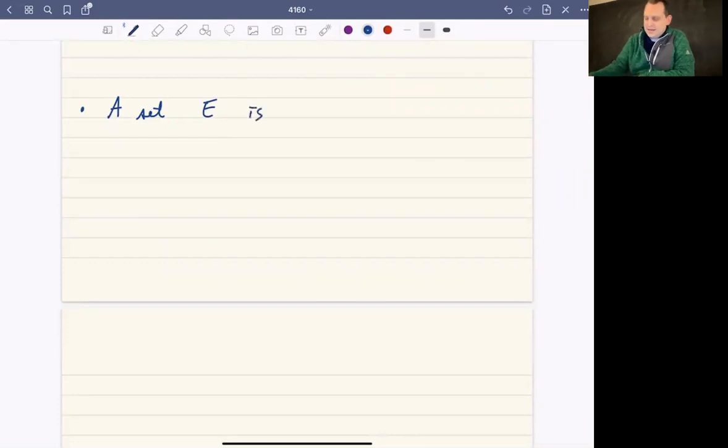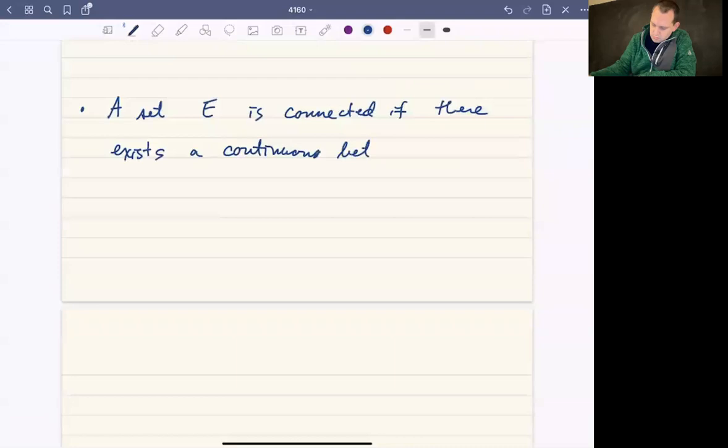But a set E is called connected if there exists a continuous path between any two points in E that stays in E.